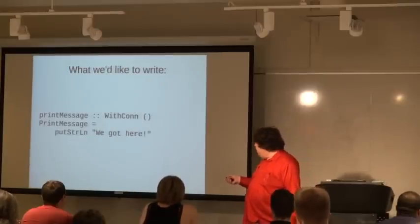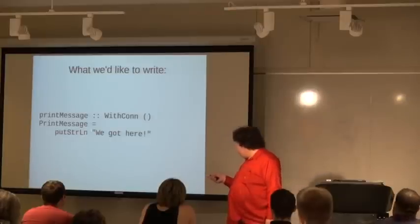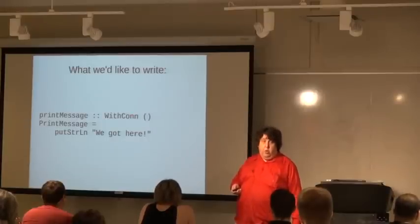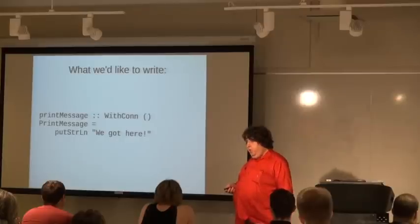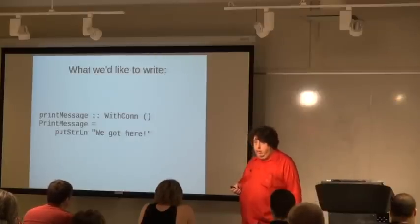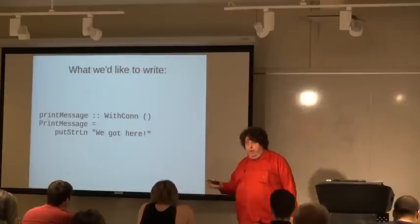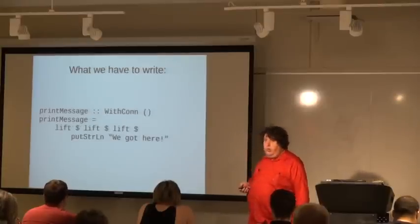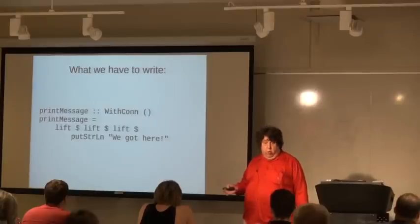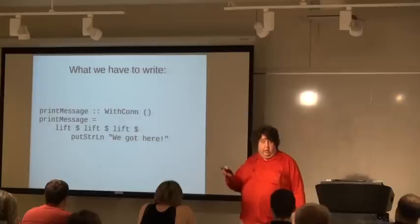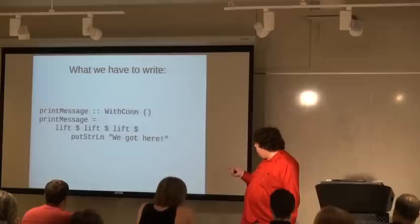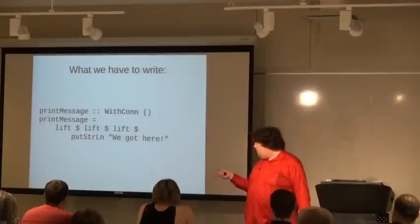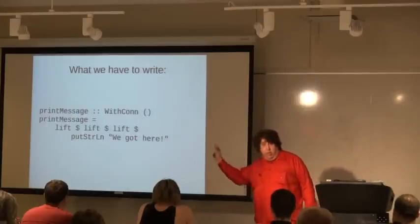This doesn't work because putStrLn is in the IO Monad and here we're saying we're in the WithCon Monad. There is a function called lift that lifts you one step up a Monad's transformer stack. So from IO you do one lift to get into WithError, another lift to get into WithPool, and a third lift to get into WithCon. We have to write the code with lift, lift, lift because we're three Monad transformer levels up.